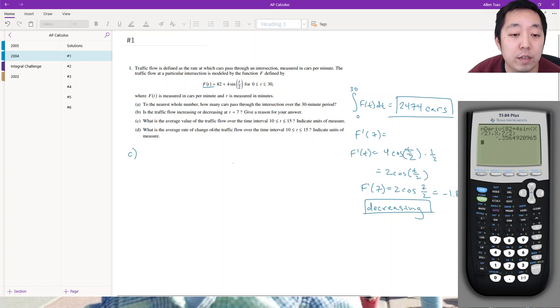What is the average value of the traffic flow over the time interval? Okay, the average value: we want the average of f(t), which means we want to integrate from 10 to 15 of f(t) dt and divide it by the width of the interval, which is 10 minus 5.